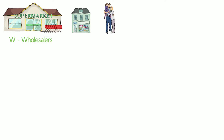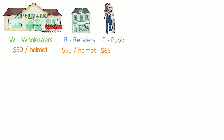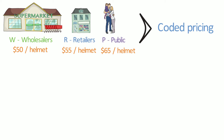Neil has three different types of customers: wholesalers, retailers and the general public. Each type requires a different price list. His price list will consist of W for wholesalers at $50 per helmet, R for retailers at $55 per helmet, and P for the general public at $65 per helmet, each defined against the relevant customer account. This is referred to as coded pricing.